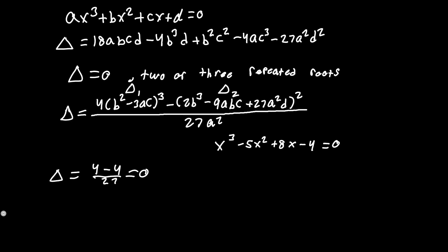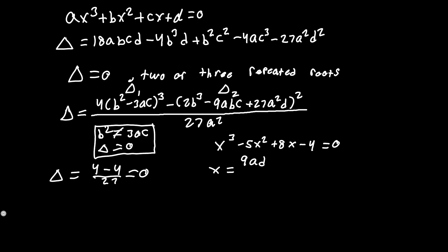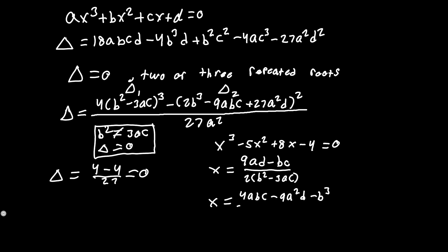This tells us we have a double repeated root. To find it, use x = (9AD - BC) / (2(B² - 3AC)). The simple (distinct) root is found by x = (4ABC - 9A²D - B³) / (A(B² - 3AC)).